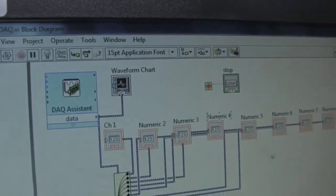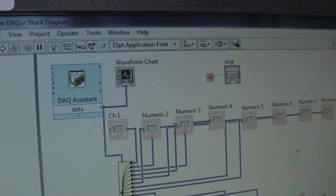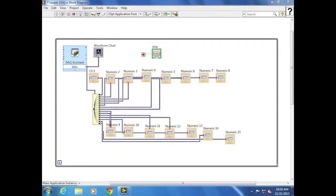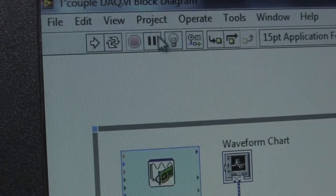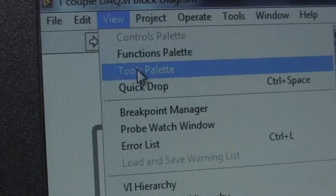The block diagram shows each indicator control and its wiring. To bring up the tools palette, go to View Tools Palette.